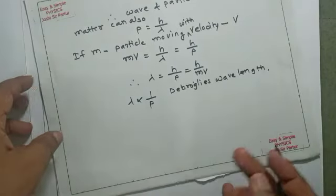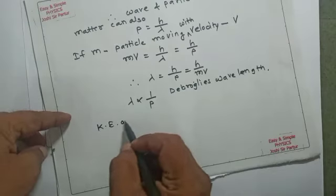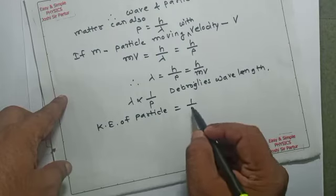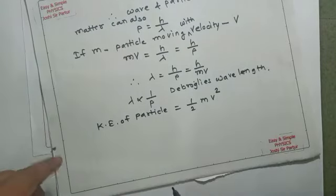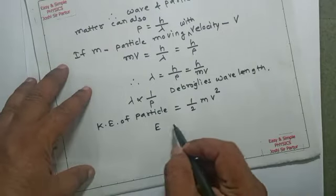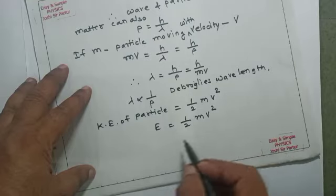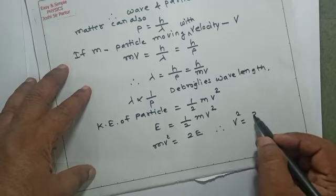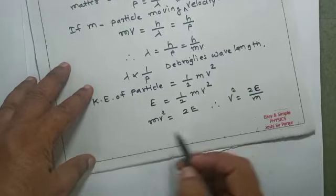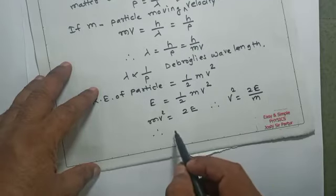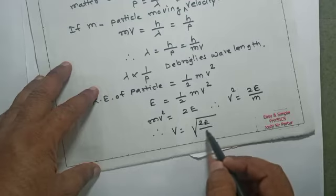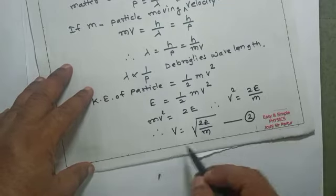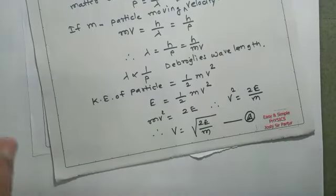Another way to express this: if the kinetic energy of a particle having mass m and velocity v is (1/2)mv², then E = (1/2)mv². Multiplying both sides by 2, mv² = 2E. Therefore v² = 2E/m, and taking the square root, v = √(2E/m). This is equation number A.